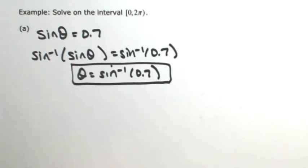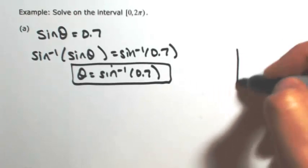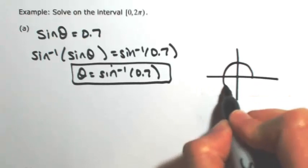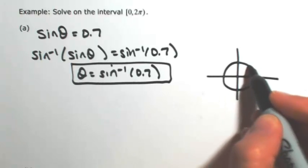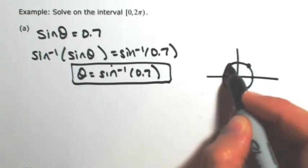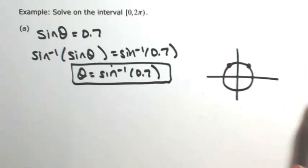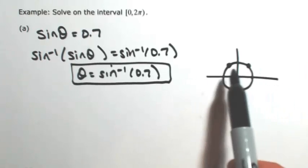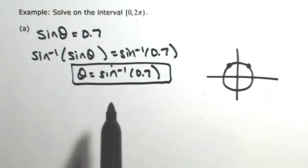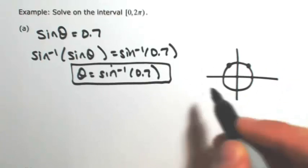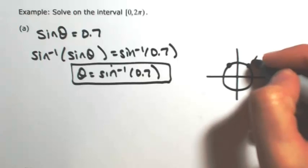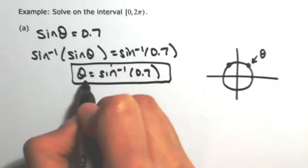And I say an answer because there's actually two answers. Keeping in mind the sine function, where the y-coordinate is 0.7—I'm just kind of giving you an approximation here—would take place in the first quadrant or the second quadrant. Since we did an inverse sine, inverse sine is in the first and fourth quadrants. So this angle that we just found is, let's call it θ₁.